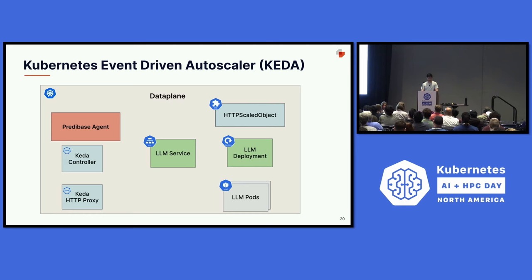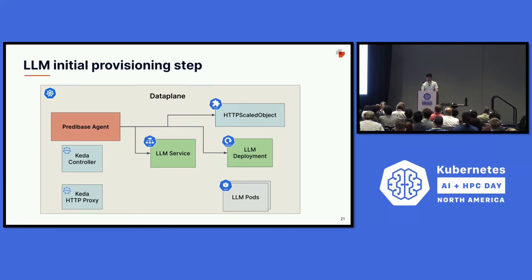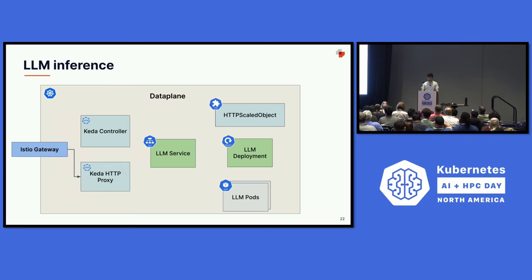Instead of just creating the LLM service and deployment as one might do in a standard Kubernetes environment, we also create the HTTP scaled object, which is a custom resource for KEDA. This configures the LLM deployment to either scale up or down based on parameters you specify in the object. This lets us scale down to zero or scale up past one and beyond.